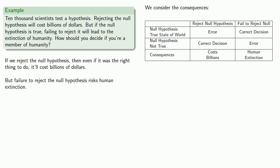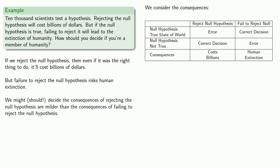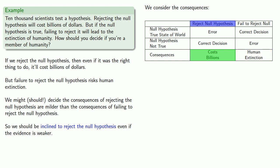Any sensible, rational person will decide that the consequences of rejecting the null hypothesis are milder than the consequences of failing to reject it. So we should be inclined to reject the null hypothesis even if the evidence is weaker. Even if only some of the scientists reject the null hypothesis, we should still consider rejecting it. And if almost all of the scientists reject the null hypothesis, that's strong evidence, and we really ought to reject the null hypothesis.